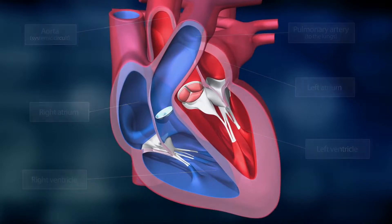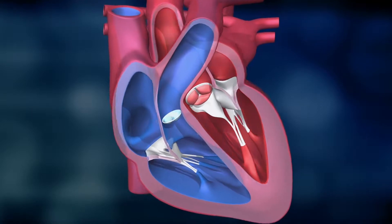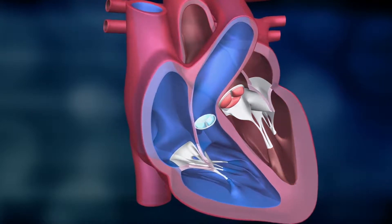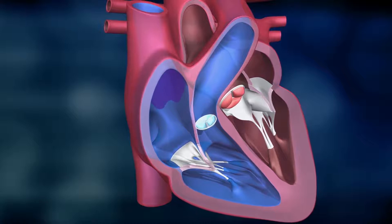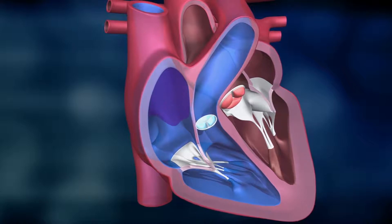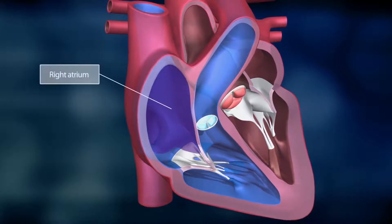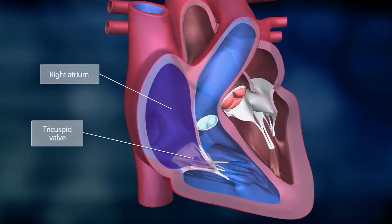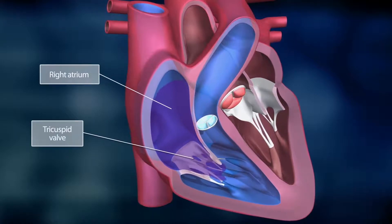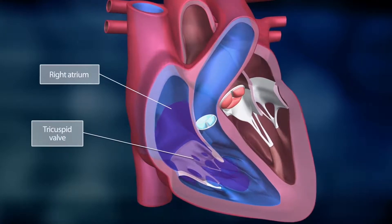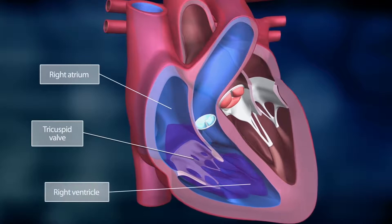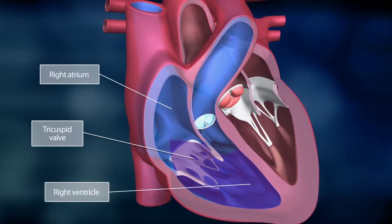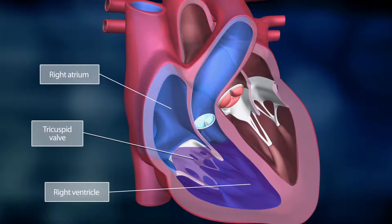The pumping cycle begins when oxygen-deprived blood returns from the body through the veins — the superior and inferior vena cava — and into the heart's right atrium. When the right atrium is filled with blood, it contracts and a valve, the tricuspid valve, opens, allowing the blood to flow into the right ventricle. This is called atrial systole.